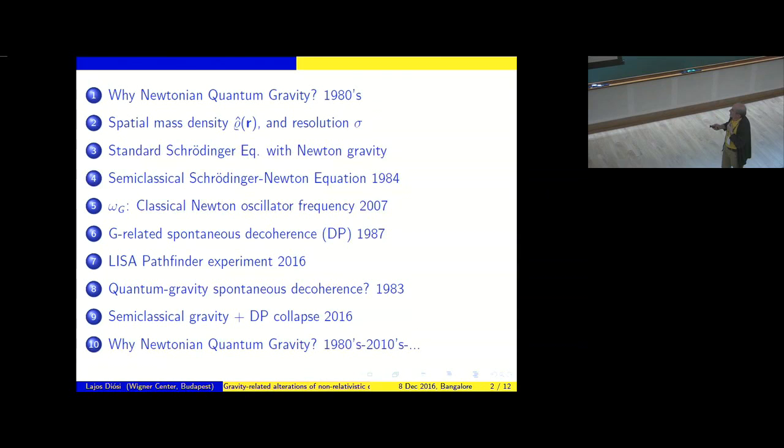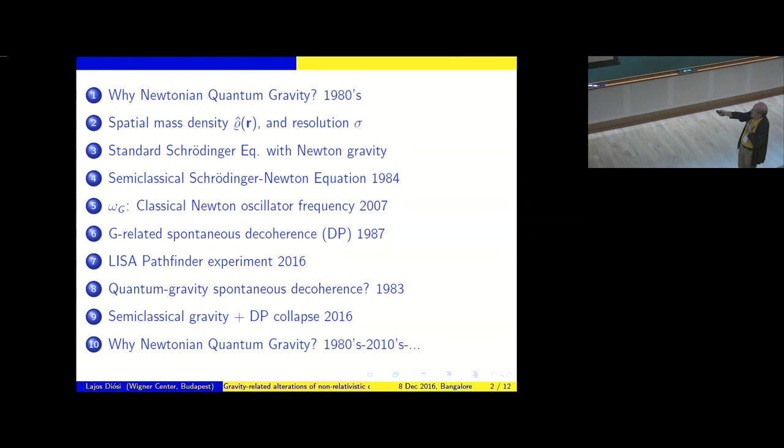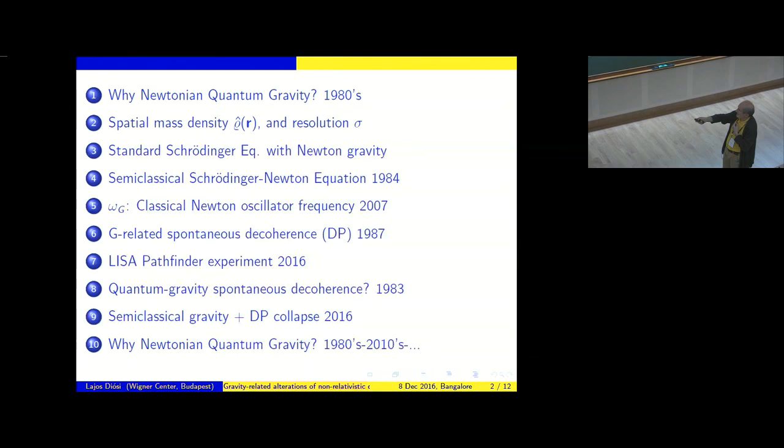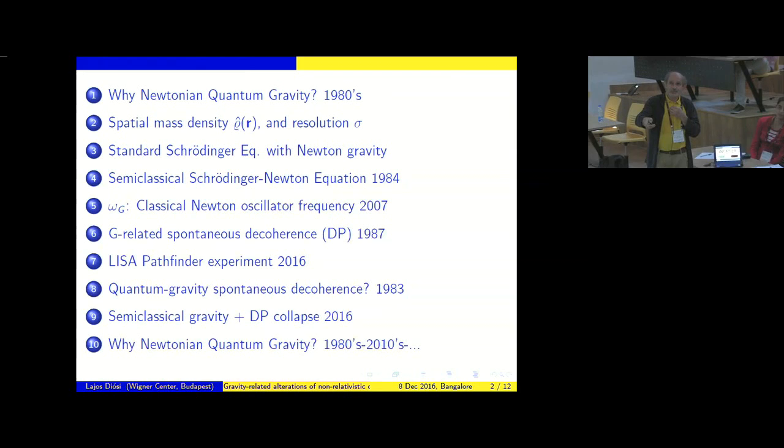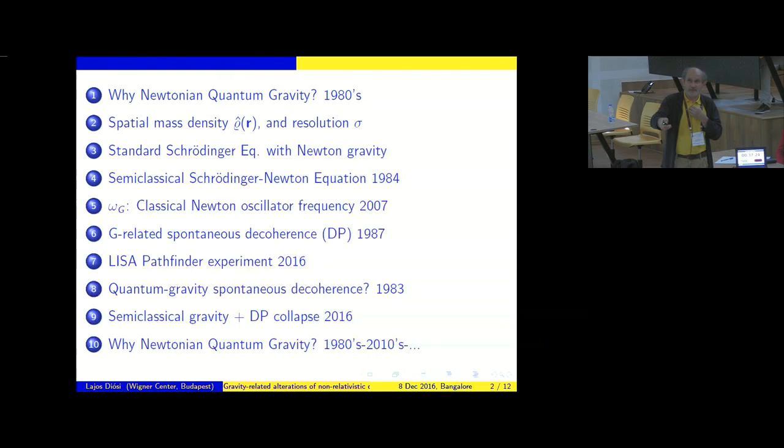The big issue is why we think Newtonian quantum gravity is important. Then I introduce the notion of spatial mass density, which is the key ingredient of Newtonian quantum gravitational models. Then I come to the standard Schrodinger equation with Newtonian gravity as a perturbation. This is standard quantum gravity. Despite my chosen address, this is standard, unaltered, unitary quantum mechanics. Now, in the mid-1980s, the first robust modification of standard quantum mechanics was born in terms of the Schrodinger-Newton equation.